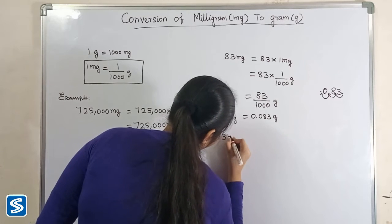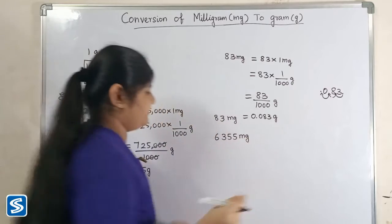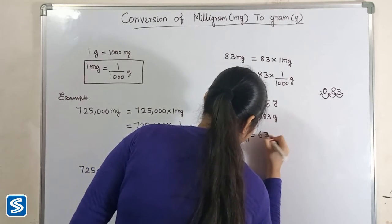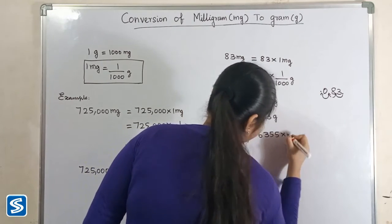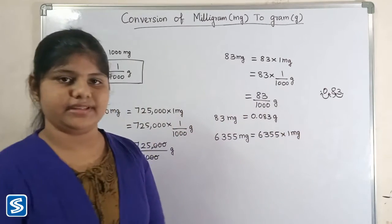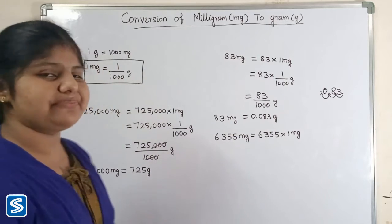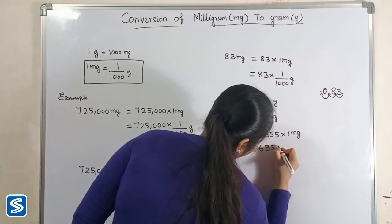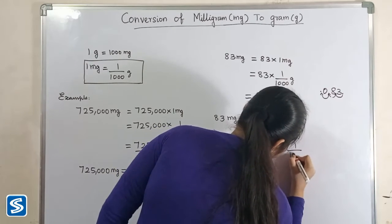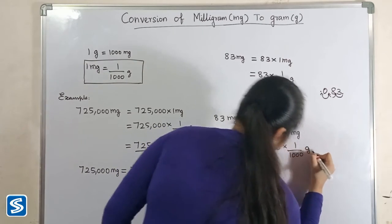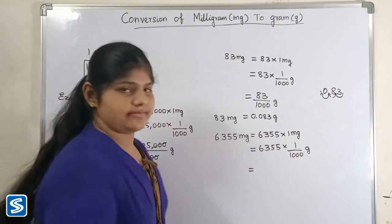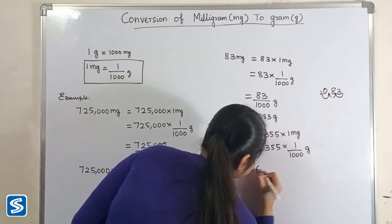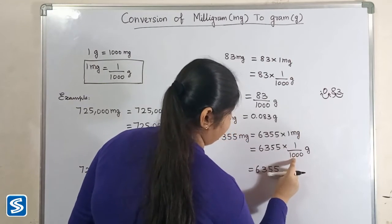Next we will take another example: 6,355 milligrams. 6,355 milligrams can be written as 6,355 multiply one milligram. Now we have to substitute one by thousand grams in the place of one milligram. 6,355 multiplied by one will be 6,355 divided by 1,000 grams.